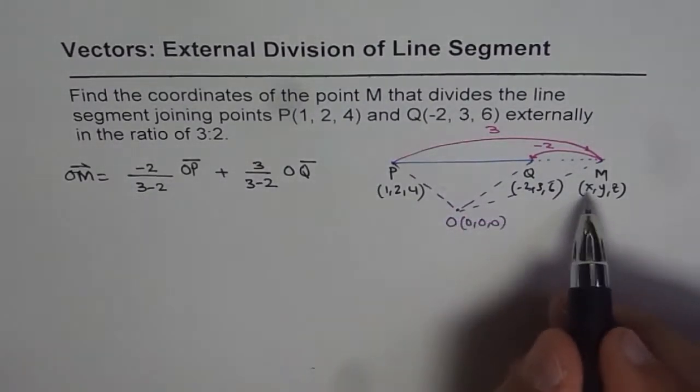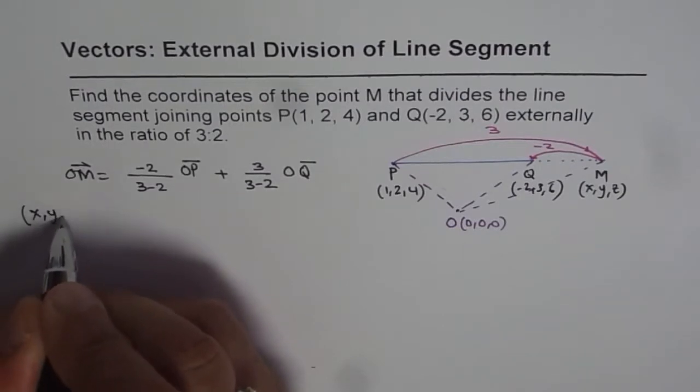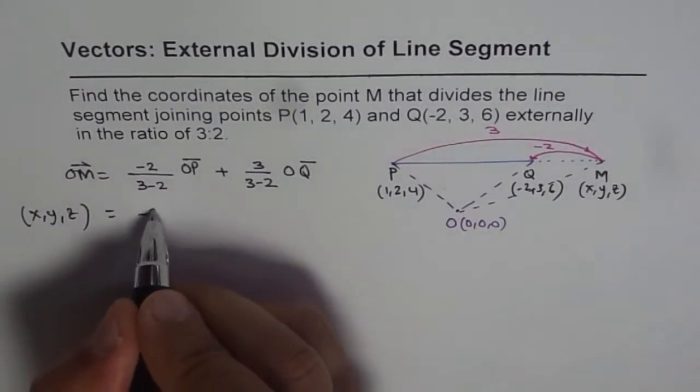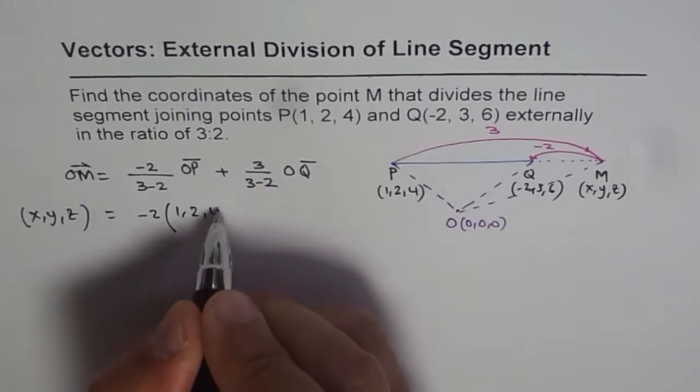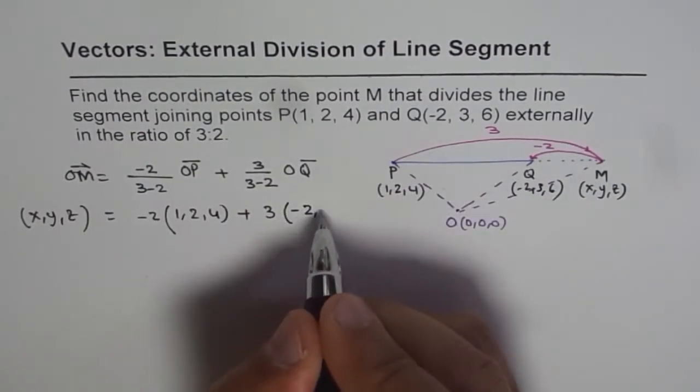OM will be (x, y, z). The coordinates equal -2 times OP, which is (1, 2, 4), plus 3 times OQ, which is (-2, 3, 6).